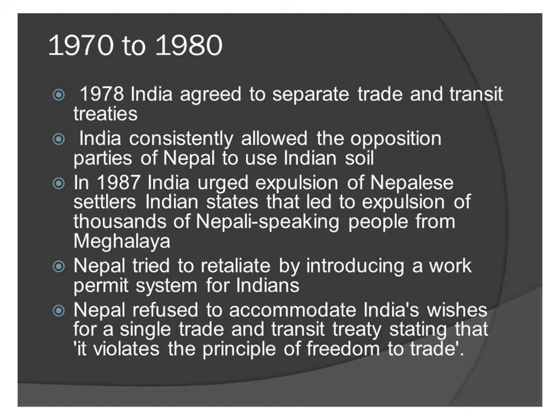In 1987, India urged the expulsion of Nepalese settlers in Indian states, which led to the expulsion of thousands of Nepali-speaking people from Meghalaya. Nepal tried to retaliate by introducing a work permit system for Indians. India retaliated by not agreeing to renew the separate trade and transit treaties; instead it again wanted a single trade and transit treaty. However, Nepal said that this violated freedom of trade, leading to the 1989 crisis in India-Nepal relations.